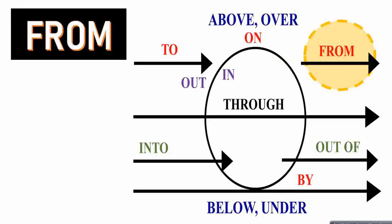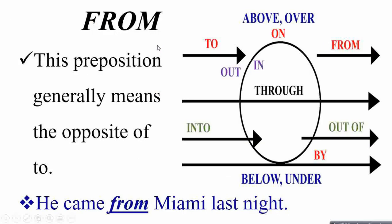Then comes the other one which is from. Again, it is the opposite of to. How do we work with this? So this preposition generally means the opposite of to, as you can also picture on this diagram. This preposition from is opposite to to.